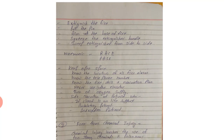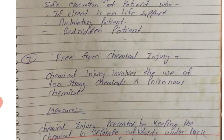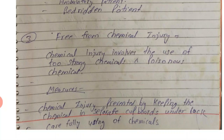Freedom from chemical injury. Chemical injury involves the use of strong chemicals and poisonous chemicals. Chemical injury is prevented by keeping chemicals in separate cupboards under lock, and by carefully and properly using those chemical substances.